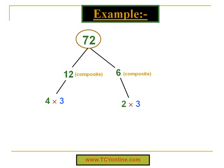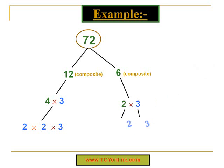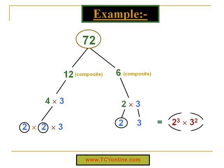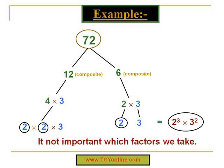So we simply break down 4 and 2 further. 4 can be written as 2 times 2, while 2 can simply be written as 2. So that means the prime factors of 72 are 2 × 2 × 2, which is simply 2 to the power of 3, times 3 × 3, which is simply 3 to the power of 2. That means the prime factors are 2³ × 3².